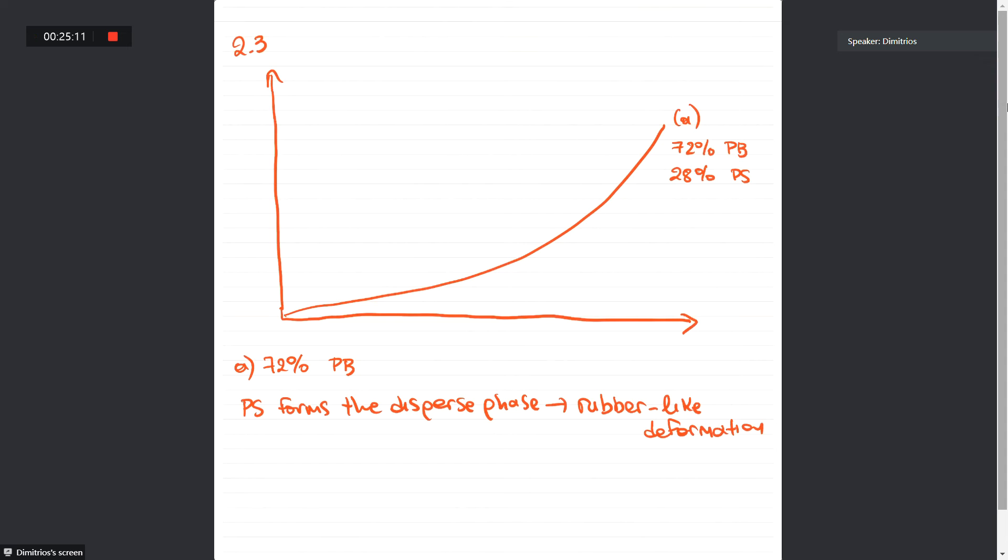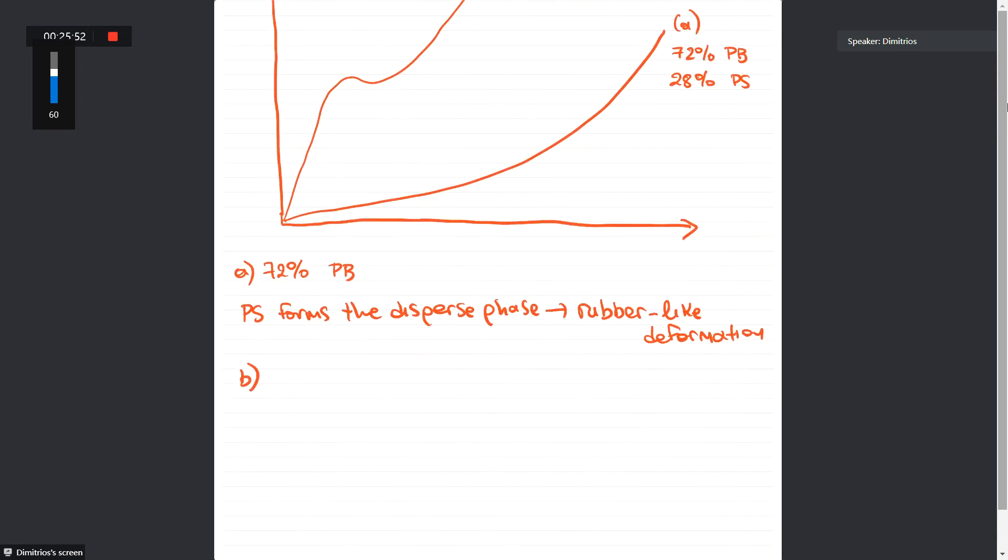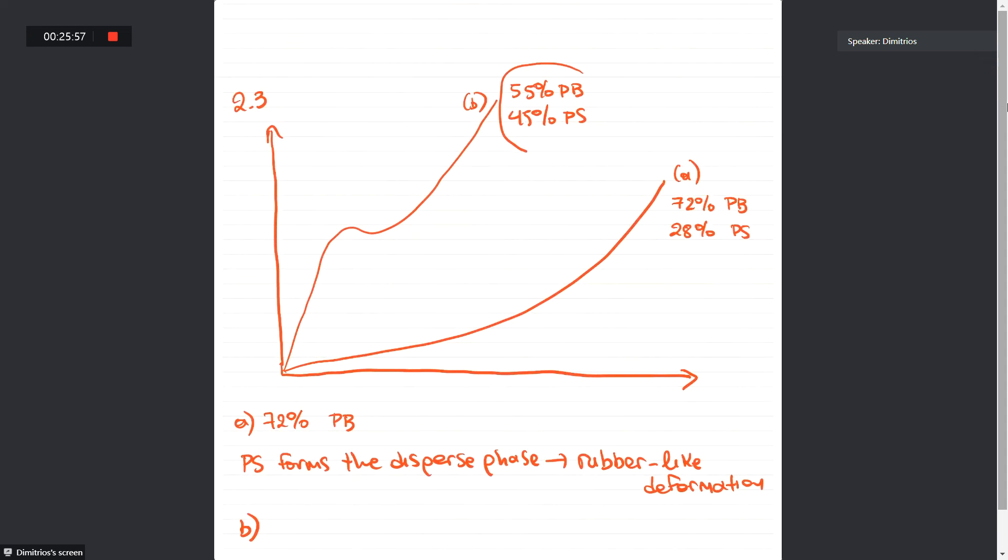For B where we have 55 percent of polybutadiene and 45 percent of polystyrene, we will have a small amount of plastic deformation. So the curve should look like that. We have much more polystyrene in this case, so we can still have higher modulus and we have plastic deformation in this case. So this is curve number B, 55 percent of polybutadiene, 45 percent of polystyrene. So for case number B, we have in this region, we have compositional symmetry. We have the lamellar structure.